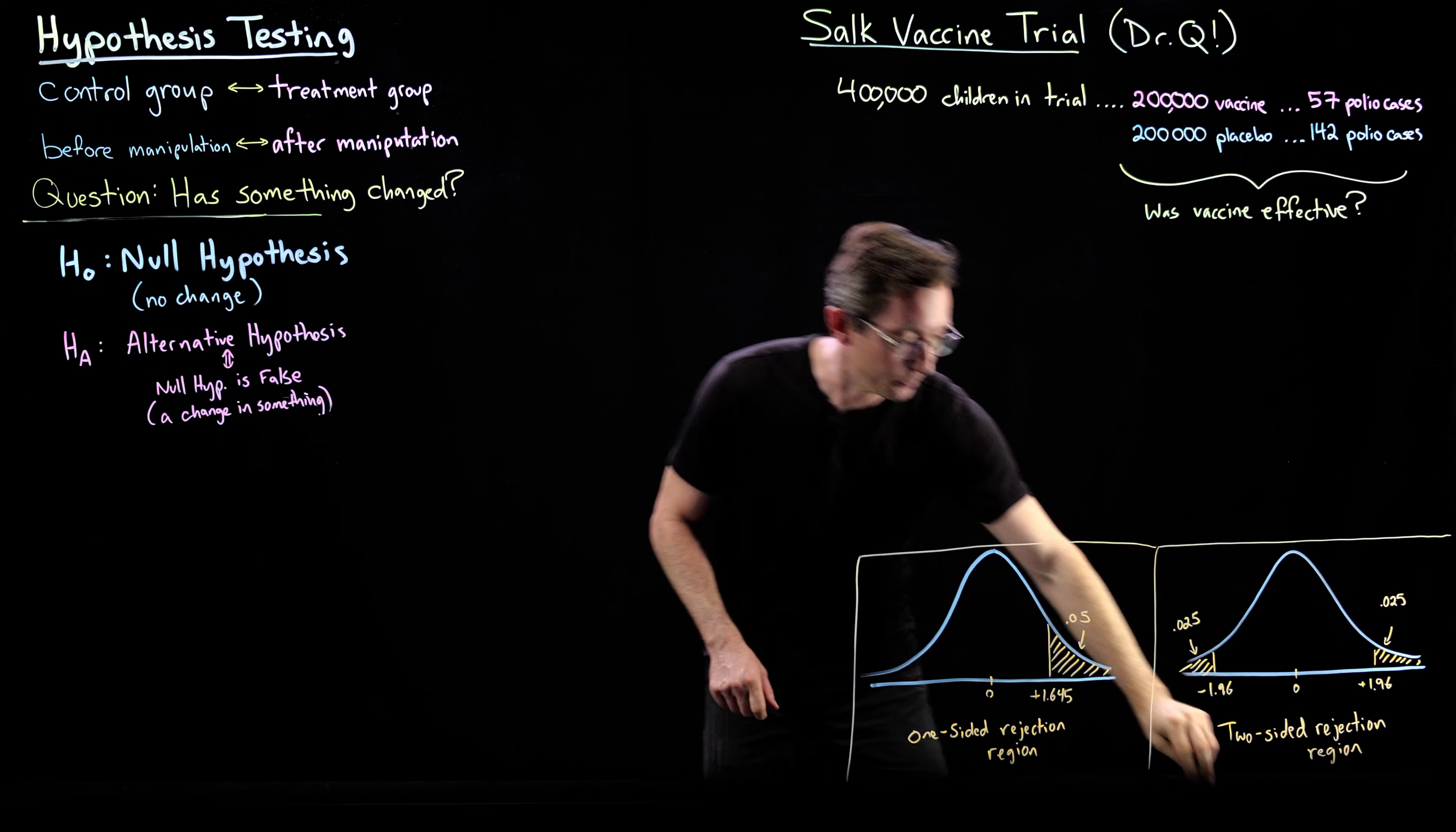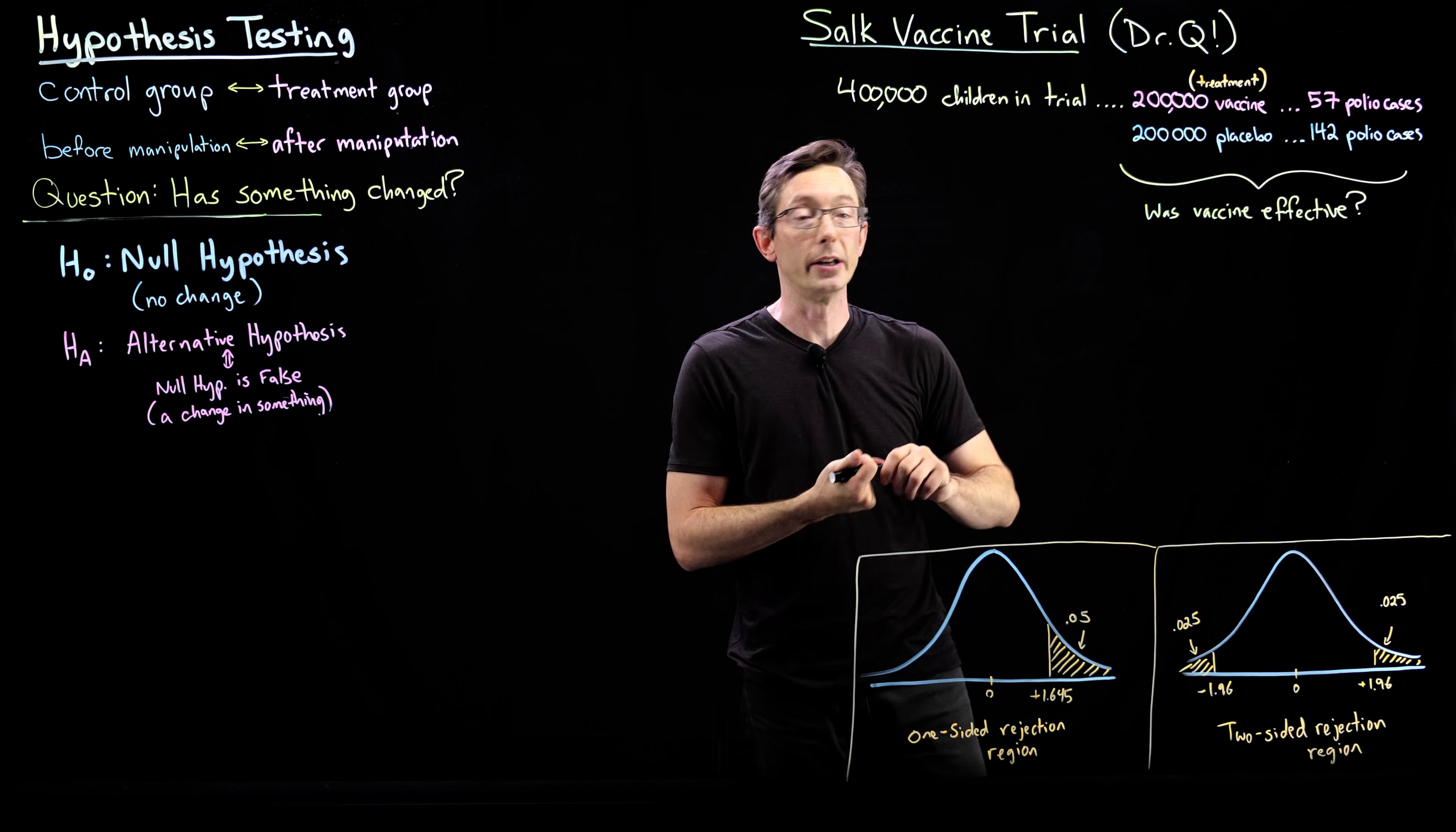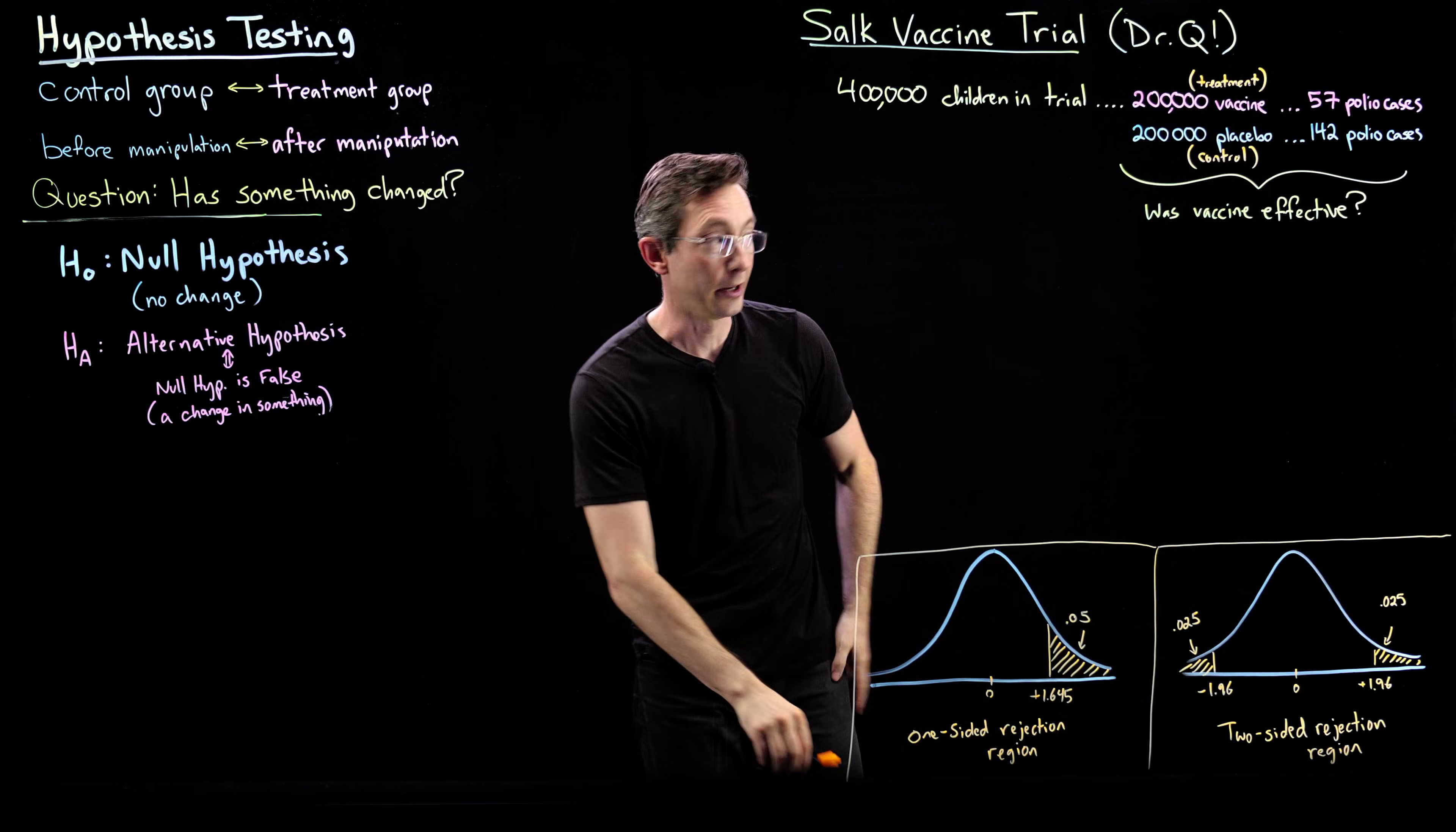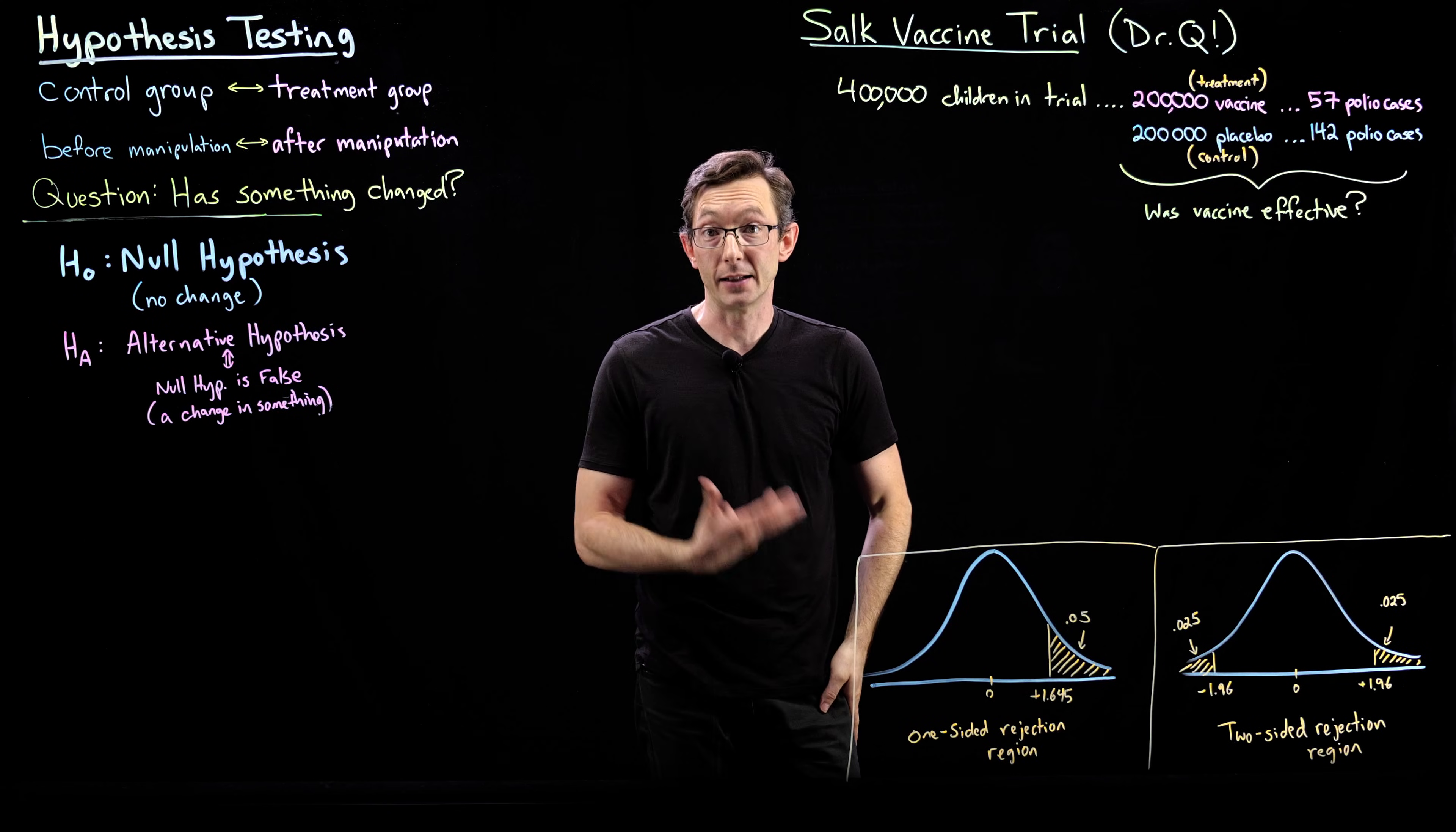And out of the vaccine group, so the vaccine group is essentially the treatment group, 57 of those 200,000 did in fact contract polio. They ended up getting polio. And of the placebo group that did not get the treatment, this is the control group, 142 polio cases were reported. So just by eye, it looks like there's almost three times as much polio in the control group as the treatment group. So that hints that there probably was some effect of this vaccine.